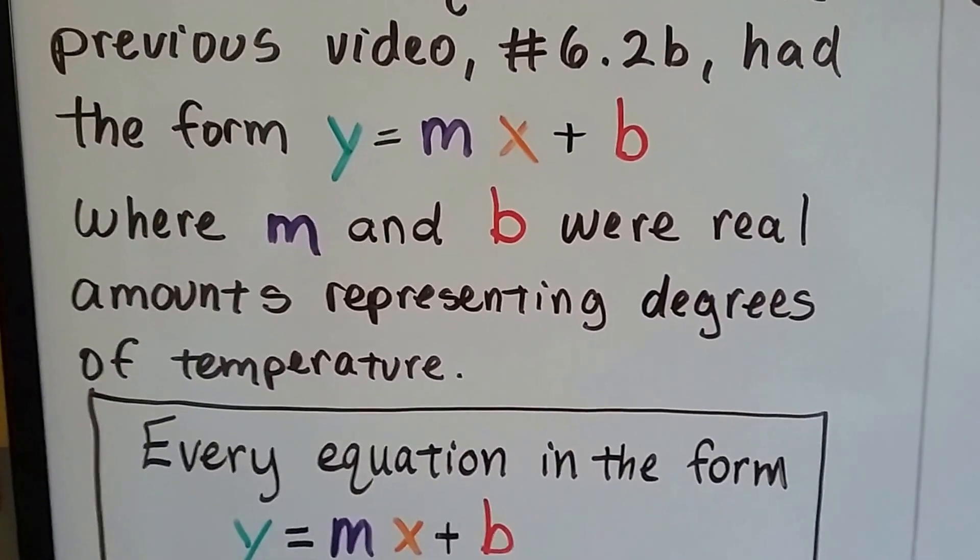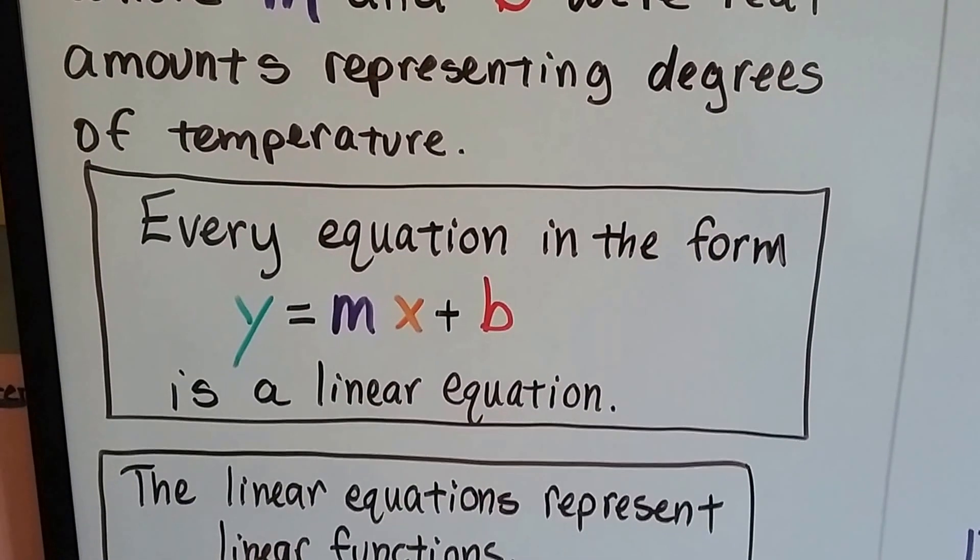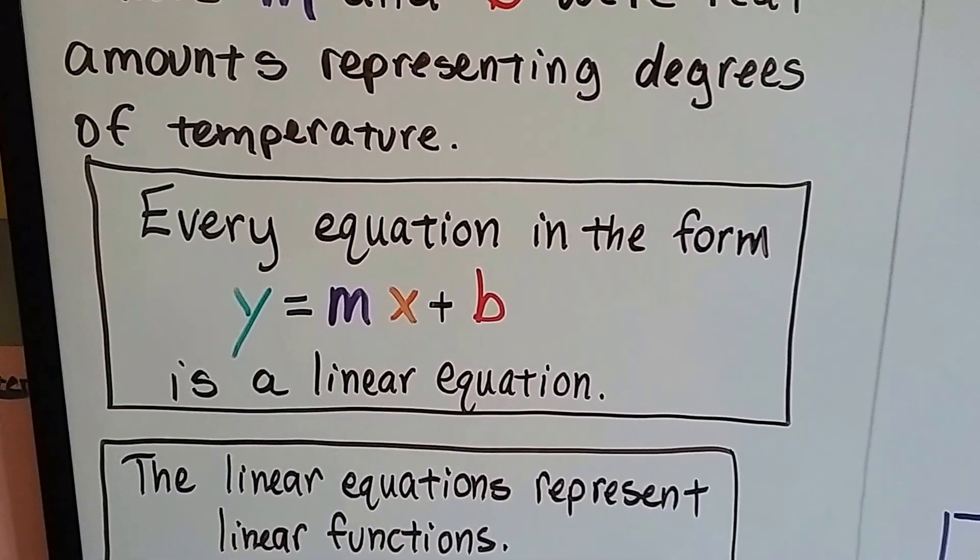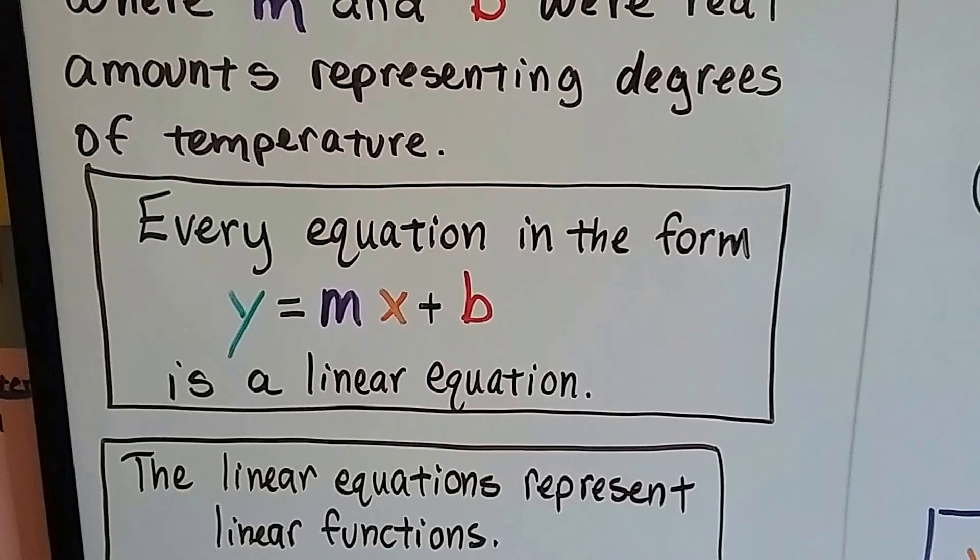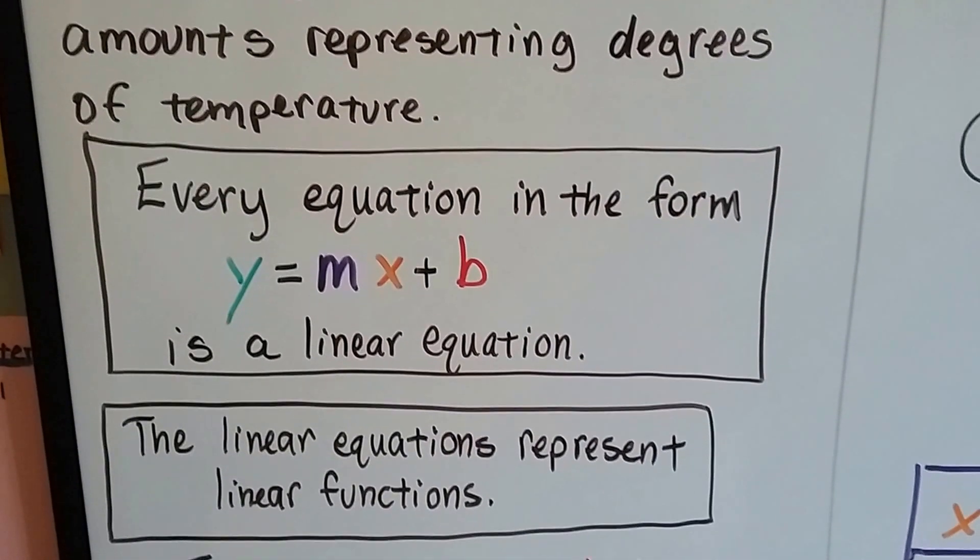You know, m was the slope, b is the y-intercept. Well, every equation in the form y equals mx plus b is a linear equation. Every equation in slope-intercept form is a linear equation.